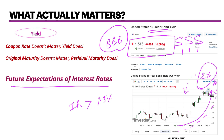But right now the markets are very certain that 1.5% is not acceptable to them, and that's why they're selling bonds, pushing yields higher. The question you might ask at this stage is: why do interest rates matter so much? Because of interest rate risk.